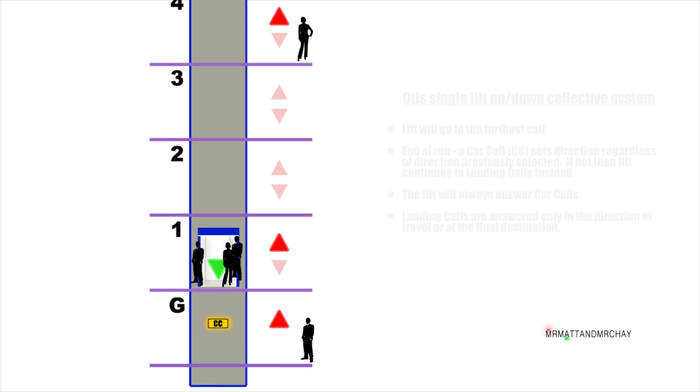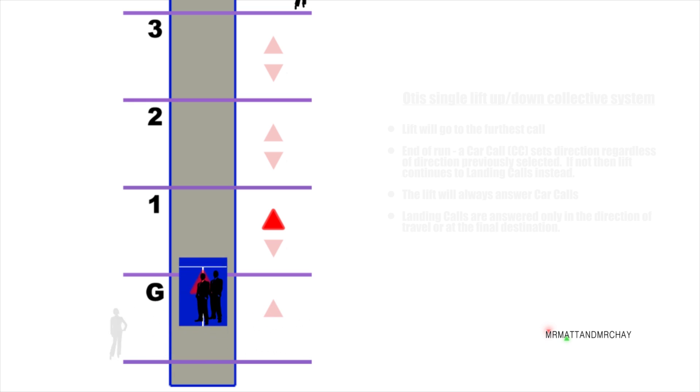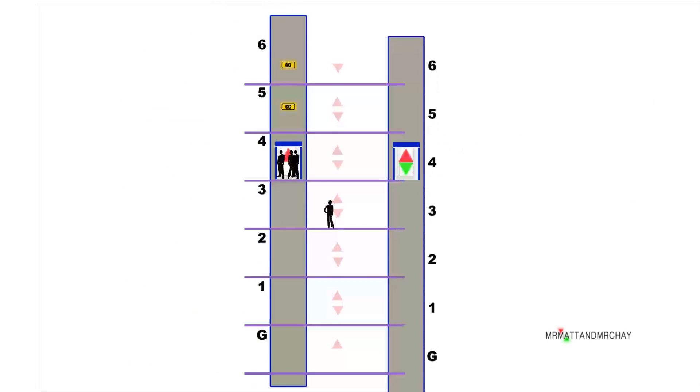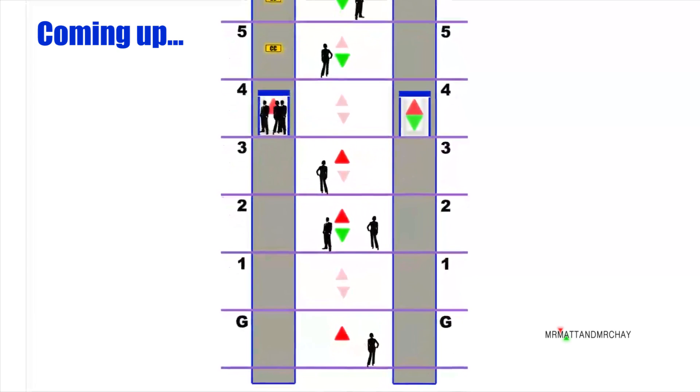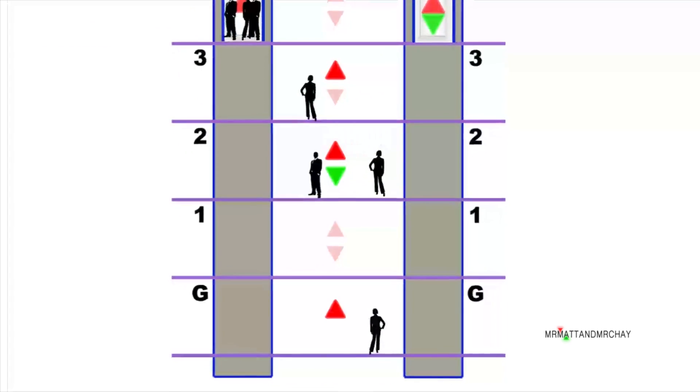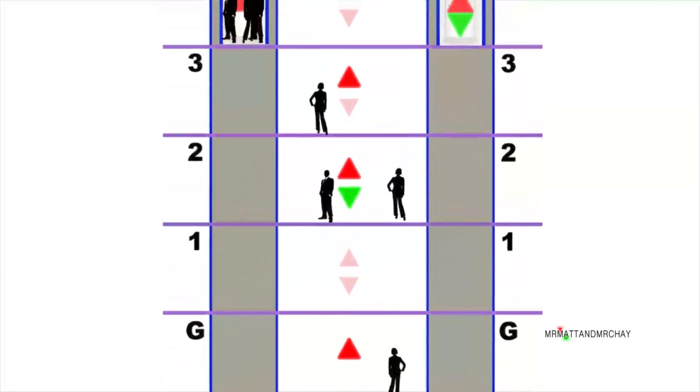This was relatively easy, but with two lifts, often called a duplex system, calls have to be allocated between lifts. Different manufacturers had different ways of managing this system. Also, in this video is the exciting conclusion to what happens next.